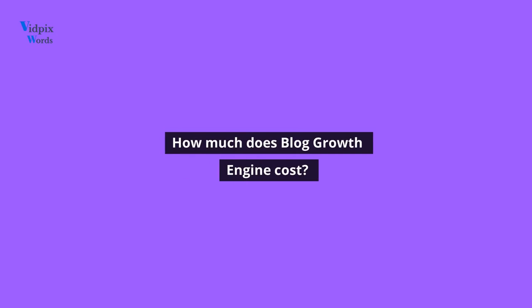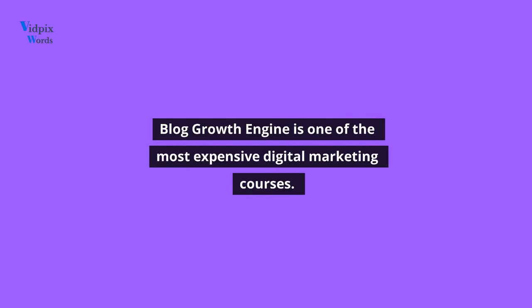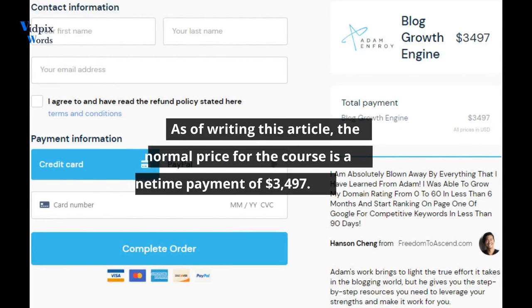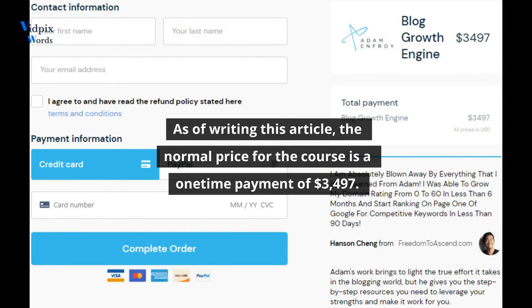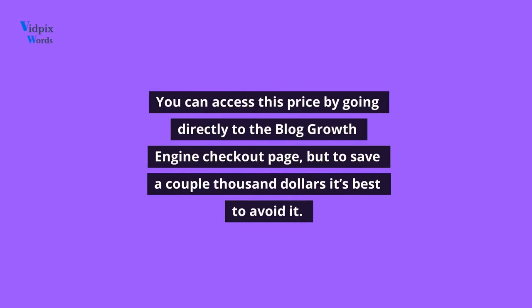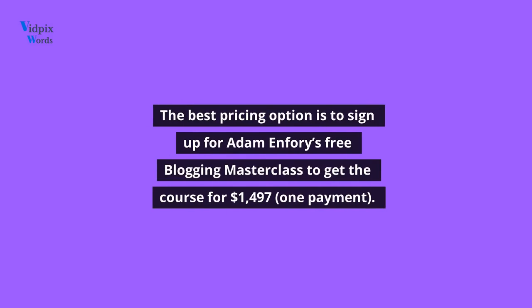How much does Blog Growth Engine cost? Blog Growth Engine is one of the most expensive digital marketing courses. Fortunately, it offers some discounted payment options, though they still cost more than we're comfortable with. As of writing this article, the normal price for the course is a one-time payment of $3,497. You can access this price by going directly to the Blog Growth Engine checkout page, but to save a couple thousand dollars, it's best to avoid it. The best pricing option is to sign up for Adam Enfroy's free blogging masterclass to get the course for $1,497 as one payment.